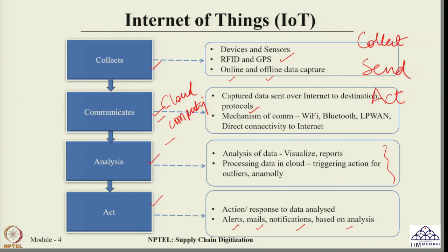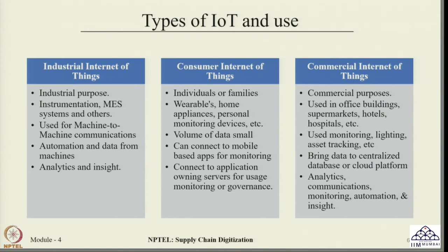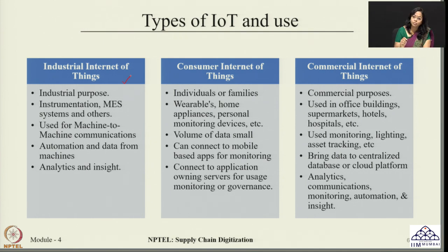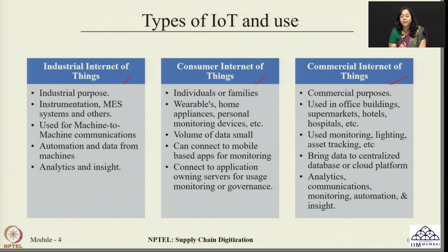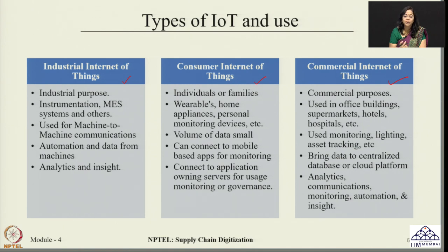Now let us understand the different types of IoT. Broadly we can classify the types of IoT into three categories based on usage: the first is Industrial Internet of Things, the second is Consumer Internet of Things, and the third is Commercial Internet of Things. When we talk about Industrial Internet of Things, these are mainly used for industrial purposes - examples include instrumentation or MES systems. The interaction or communication between machine-to-machine can be executed efficiently here.